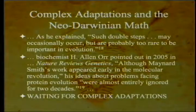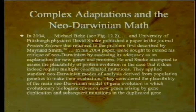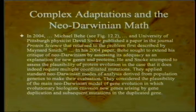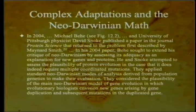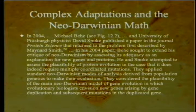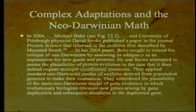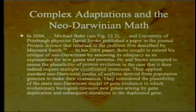Biochemist H. Allen Orr pointed out in 2005 in Nature Reviews Genetics that although Maynard Smith's work appeared early in the molecular revolution, his ideas about problems facing protein evolution were almost entirely ignored for two decades. This is because he'd given enough of an answer for people to believe the problem was solved without having to give a specific answer.